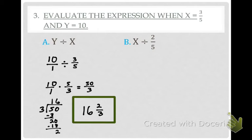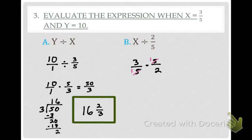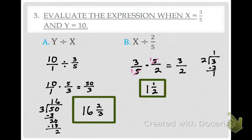Try problem B on your own — plug in x and then use KFC. What did you plug in for x? Three-fifths. Keep the first one, flip the second one, change the operation. Did you cross-reduce anything? Yes — the fives both become ones. When you multiply that together, what do you get? Three over two. Can I leave it like that? No. When you convert the improper fraction, you get 1 and one-half. Is this answer positive or negative? Positive 1 and one-half.